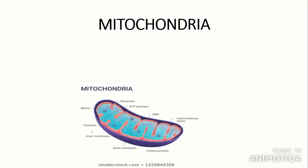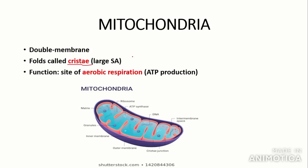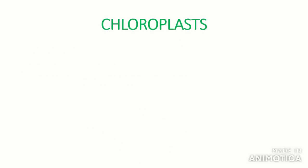The next organelle is the mitochondria. The mitochondria is kind of bean-shaped and again has a double membrane, with folds called cristae. The reason these are folded is to provide a large surface area, which means that the rate of aerobic respiration is maximally increased. The function of the mitochondria is the site of aerobic respiration — the key word here is aerobic. The purpose of respiration is mainly to produce ATP to provide energy for processes such as muscle contraction.